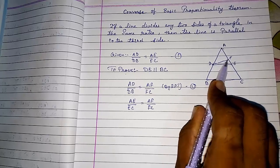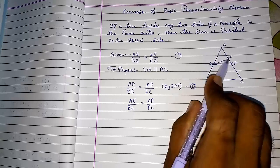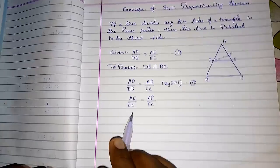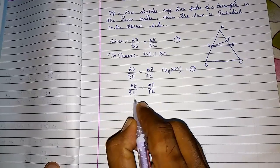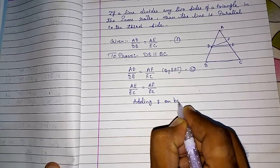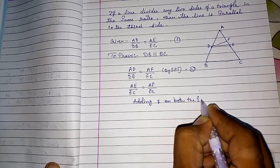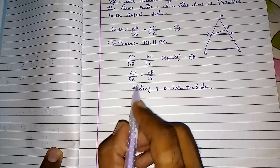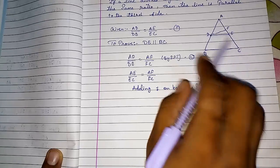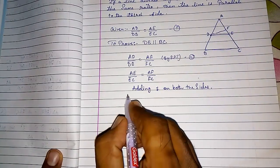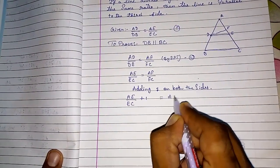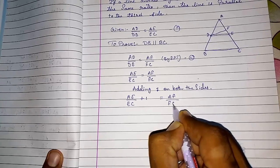We want to prove that E and F are the same points. Or we can say AF equals AE, we can take then also we can prove that they are same. So first we will add, adding 1 on both the sides. If I will add 1 on both the side then this will be equal, then also they are same only. So no problem at all. AE by EC plus 1 equals AF by FC plus 1.